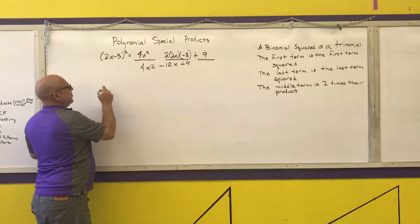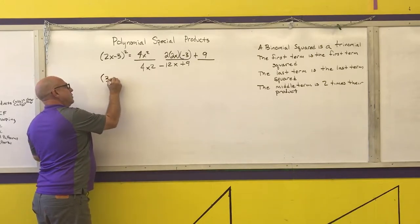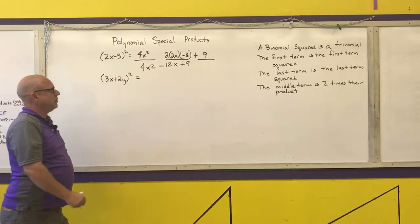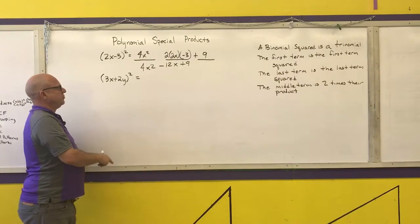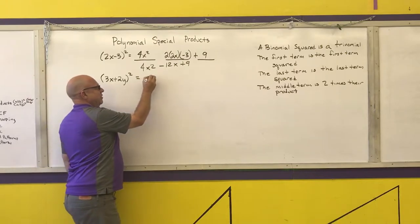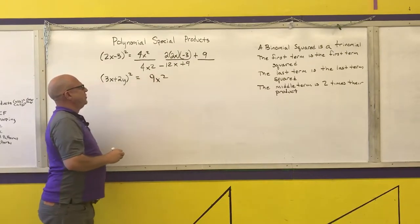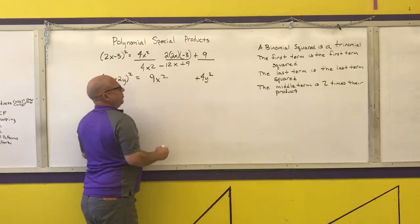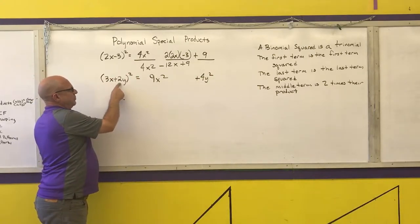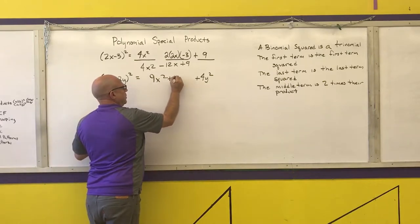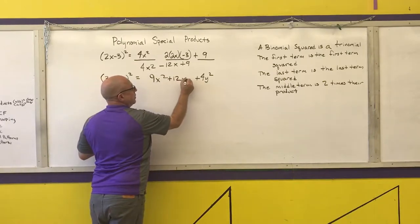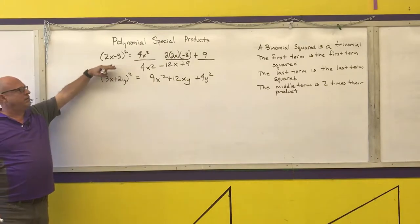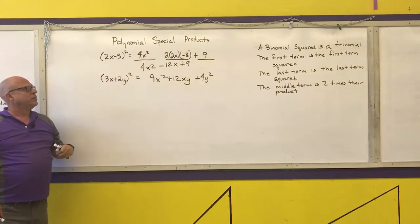You may end up with more than one variable. For example, 3x plus 2y squared. A binomial squared is a trinomial. The first term is the first term squared: 3x times 3x is 9x squared. The last term is the last term squared: 2y times 2y is 4y squared. The middle term is 2 times the product: 3 times 2 is 6, times 2 is 12xy. So the answer is 9x squared plus 12xy plus 4y squared.